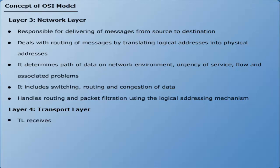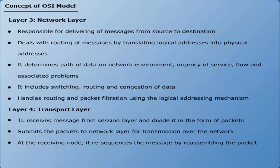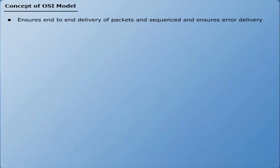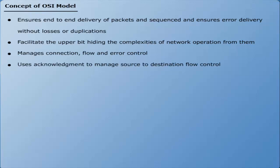Layer 4: Transport layer — receives messages from the session layer and divides them into packets. It submits packets to the network layer for transmission. At the receiving node, it re-sequences messages by reassembling the packet segments. The transport layer ensures end-to-end delivery of packets and error-free delivery without losses or duplications. It also manages connection, flow, and error control, and uses acknowledgments to manage source-to-destination flow control.